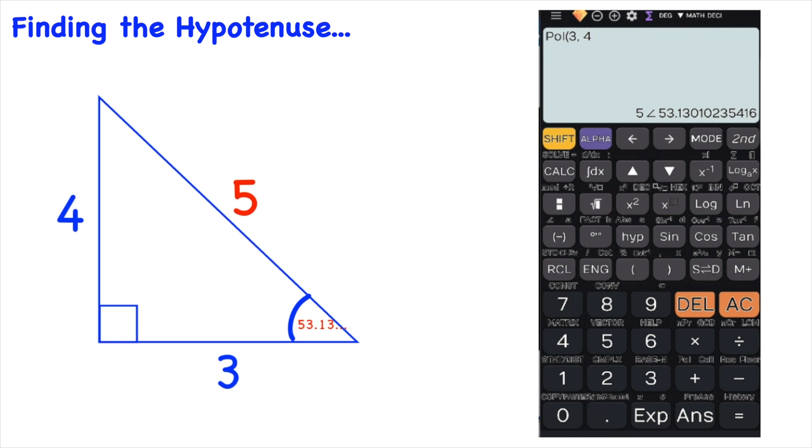Now you need to be careful here about the order in which you input the numbers. So first we put in 3 and then 4. 3 was the base length and 4 was the height.